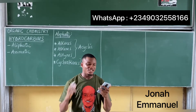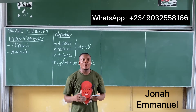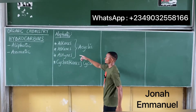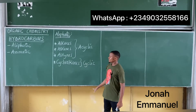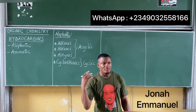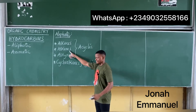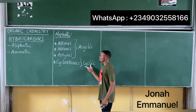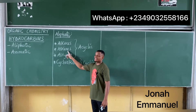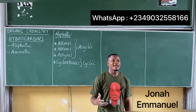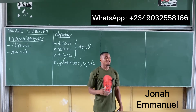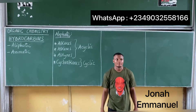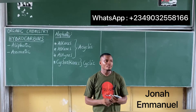Cycloalkanes have the same general molecular formula as the alkenes, but alkenes are acyclic while cycloalkanes are cyclic.